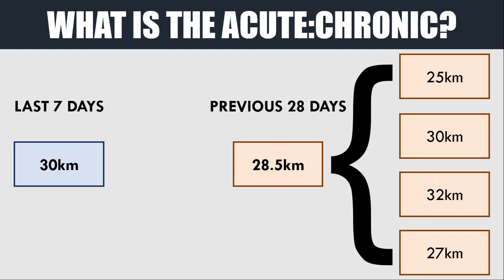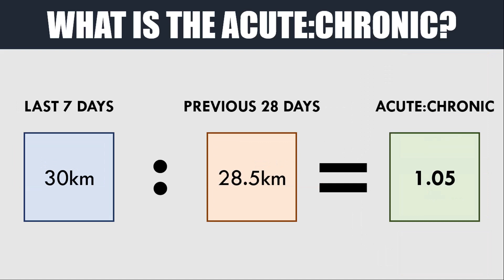For example, let's say an athlete ran 30 kilometers in the last week, and in the previous four weeks they ran 25, 30, 32, and 27 kilometers respectively. The average weekly distance over those four weeks would be 28.5 kilometers. So the acute workload is 30 kilometers and the chronic workload is 28.5 kilometers, giving an acute to chronic workload ratio of 30 to 28.5, which equals 1.05.